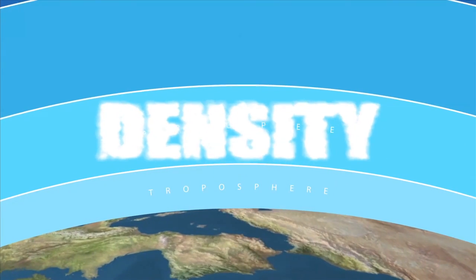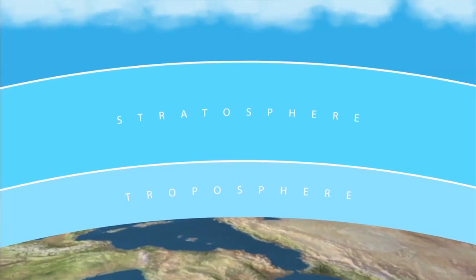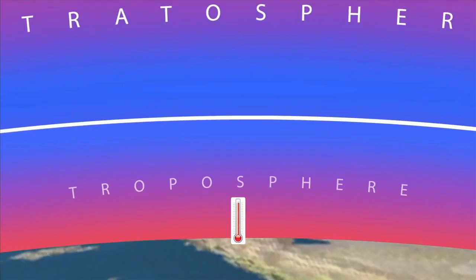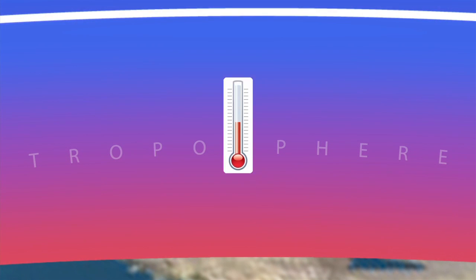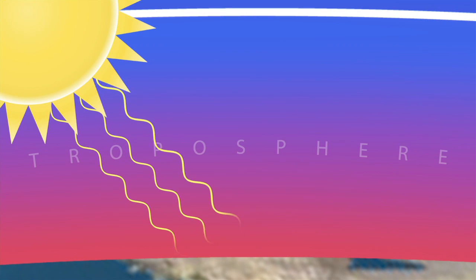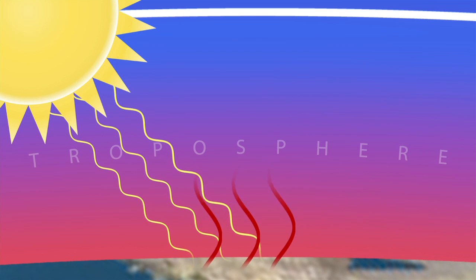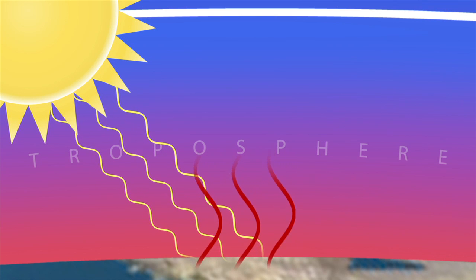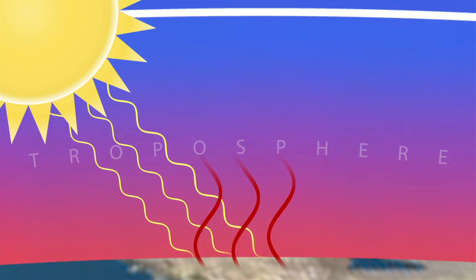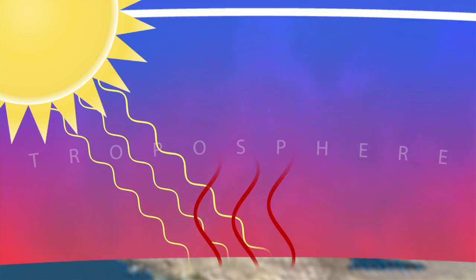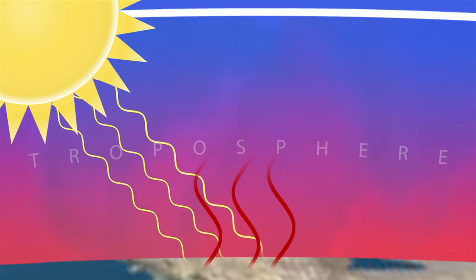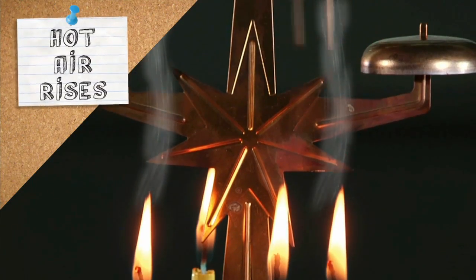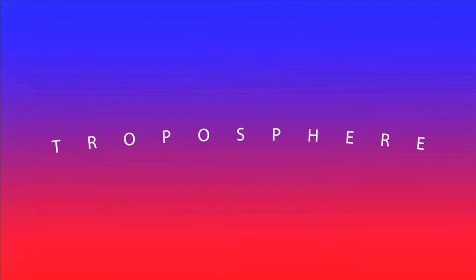Scientists have divided the atmosphere into layers based on the temperature gradient within each layer. Air density continues to decrease as you travel up through all the layers, but temperature rises or falls depending on which layer you're in. In the troposphere, temperatures decrease as you move up. Part of the sun's energy directly heats the earth's surface; another fraction is radiated back and absorbed in a process called the greenhouse effect. As a result, it's warmer closer to the earth.